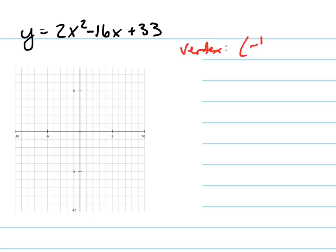Remember the vertex is negative b over 2a, that's your x coordinate, and then we'll find our y coordinate second. So let's do negative b, which is 16, over 2a, which is 4. 16 over 4 just equals 4. So my vertex is 4, so it's right here.